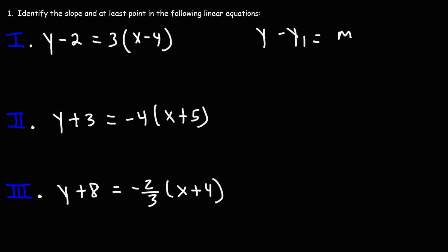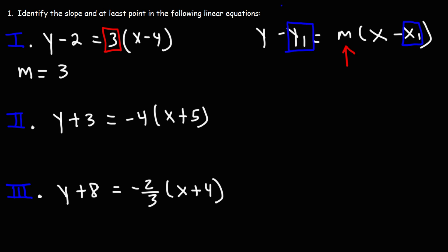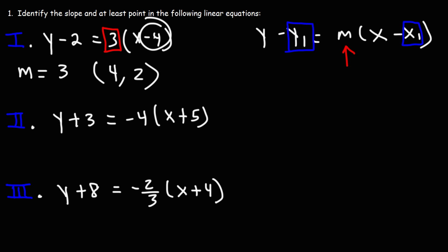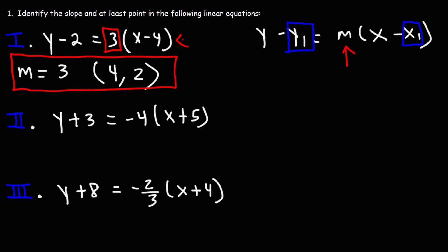Let's go back to our original equation. The slope is whatever number we see there — in this case, that's 3, so m is equal to 3. To find the point, we need to identify x1 and y1. Notice the negative sign: you take away the negative sign to get x1 and y1. So x1 is the opposite of negative 4, which gives positive 4. And y1 is going to be positive 2. Even though you see negative 4, change it to positive 4; even though you see negative 2, reverse it to positive 2.